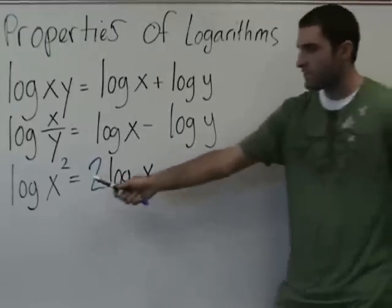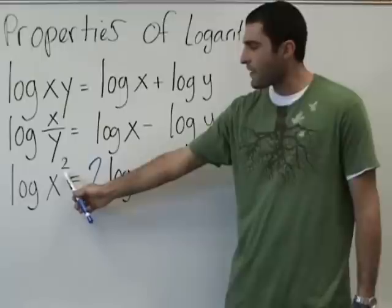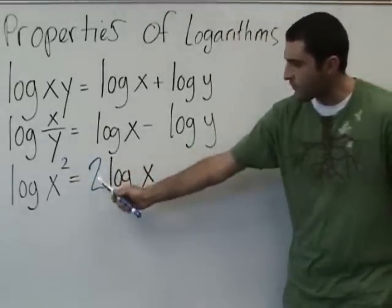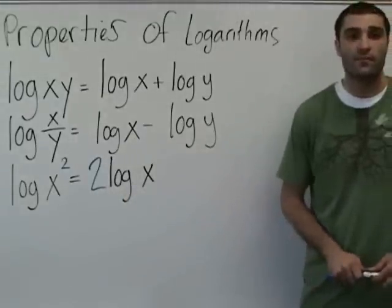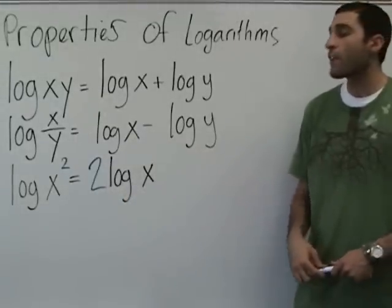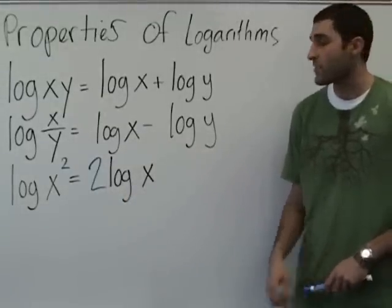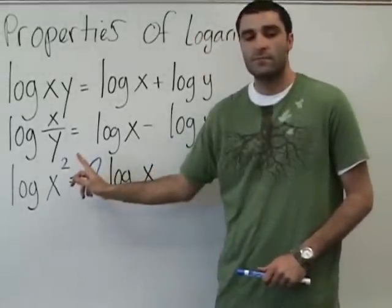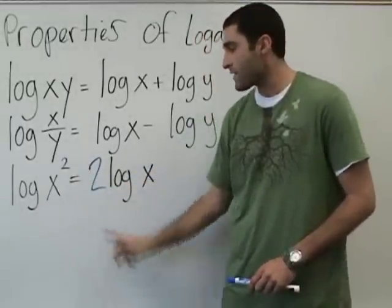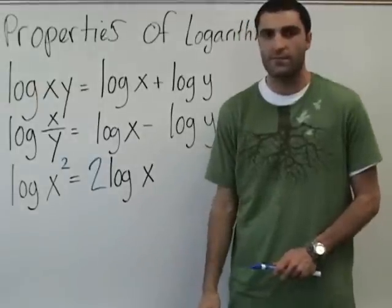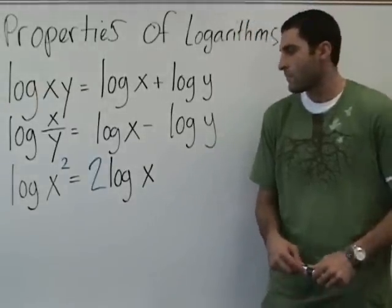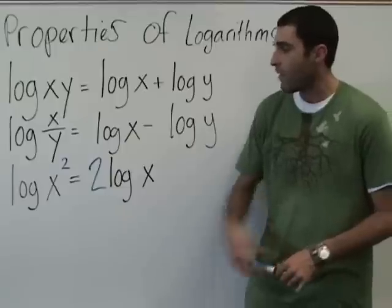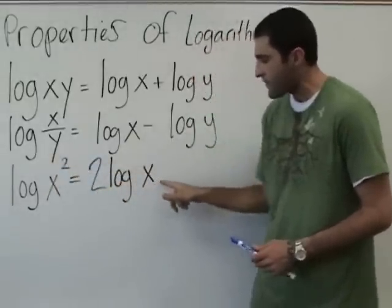So this is the property as well. When you have a square out here, it's the equivalent of moving the square to the front and saying 2 times the log. In other words, the log of 6 squared is the same as 2 times the log of 6. You switch the exponent to the front.